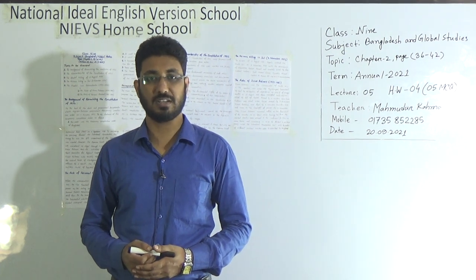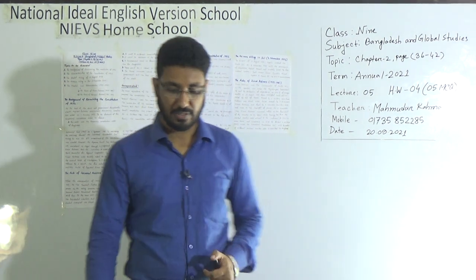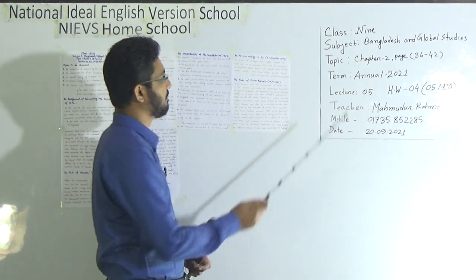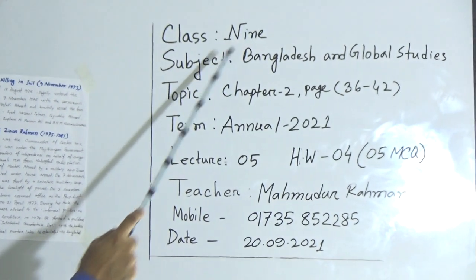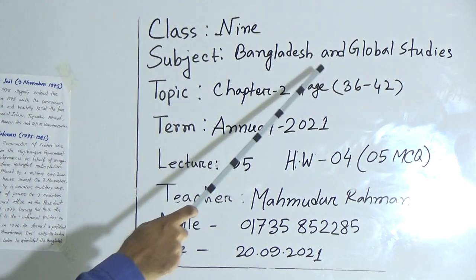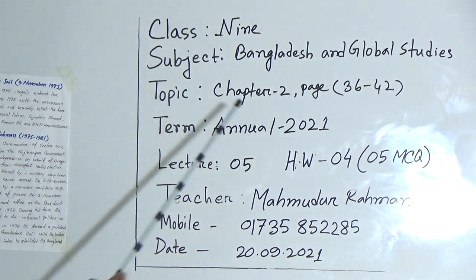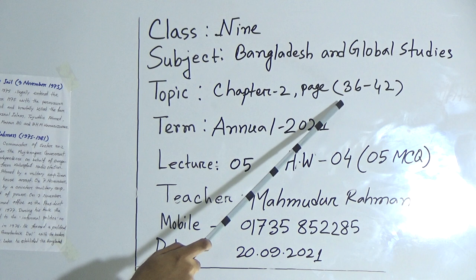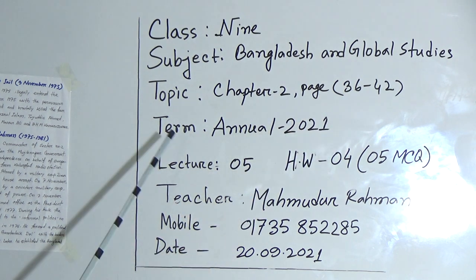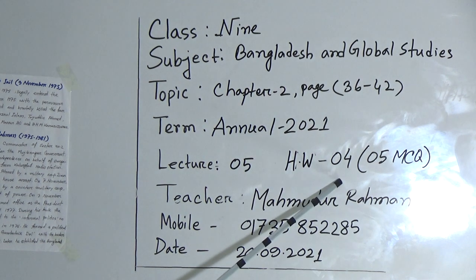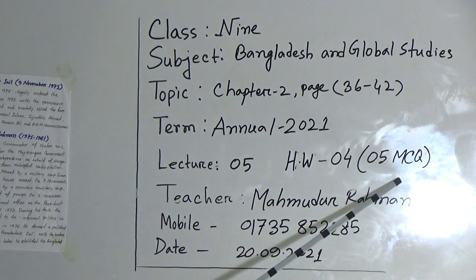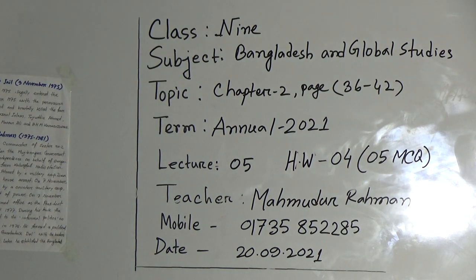This is the class for the students of class 9, subject Bangladesh and Global Studies, topic chapter 2, page number 36 to 42, tutorial lecture number 5, homework number 4. You have to do 5 multiple choice question answers from today's class. So let's start.